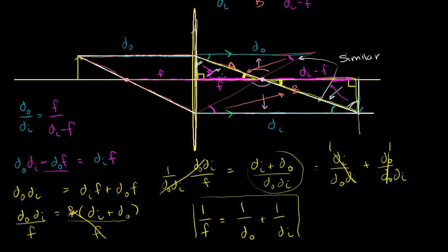In the last video, I showed that a bunch of triangles are similar to each other to come up with a relationship between the focal length, the distance of an object from the convex lens, and the distance of the image of an object from that convex lens.